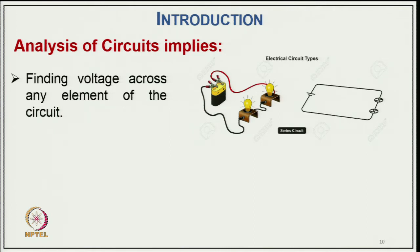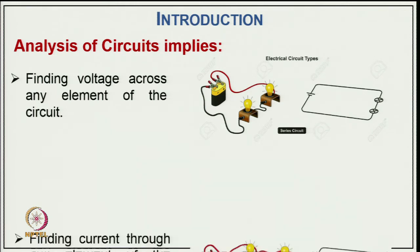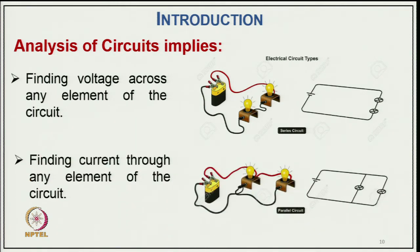Analysis of a circuit involves finding the voltage across elements of the circuit. For example, we have a source — a battery — and a couple of bulbs connected in series; this is called an electric circuit. We also look at finding the current through any element when elements are connected in parallel across a voltage source such as a battery.